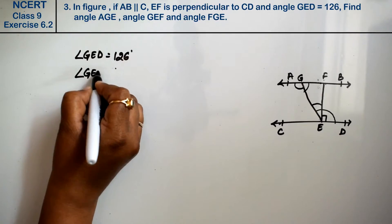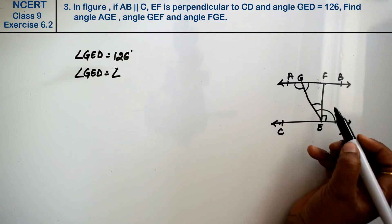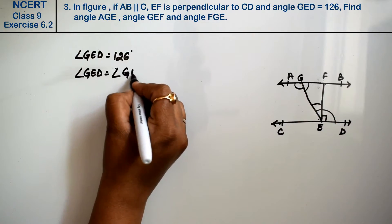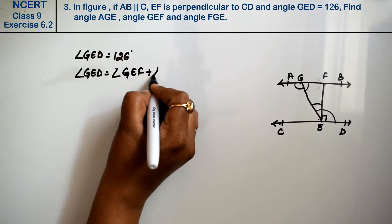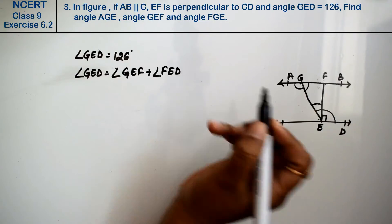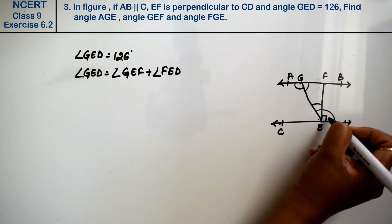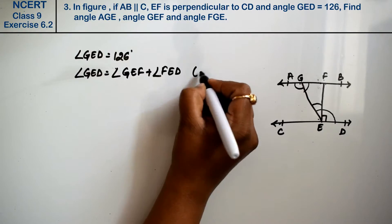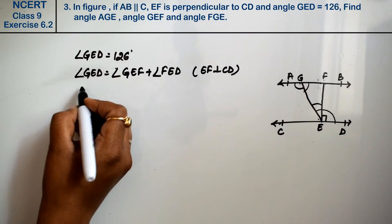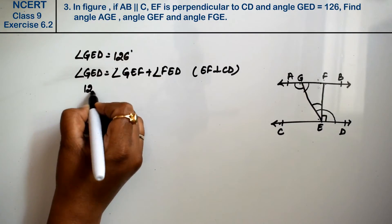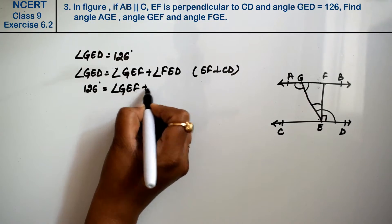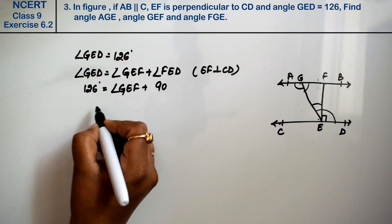Angle GED equals angle GEF plus angle FED. Now we know that EF was perpendicular to CD, so angle FED is 90 degrees. And angle GED is 126 degrees. So this was our 126 degree angle and this was our perpendicular, so this is 90 degrees.